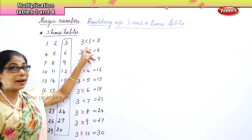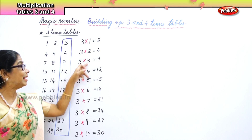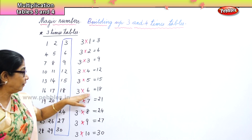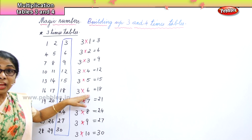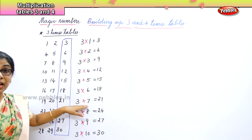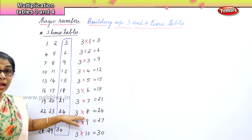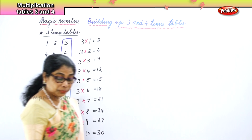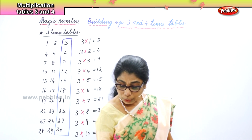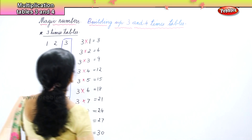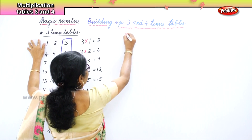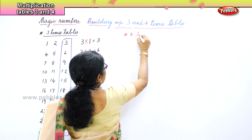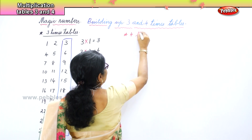So let's read it. Three ones are three, three twos are six, three threes are nine, three fours are twelve, three fives are fifteen, three sixes are eighteen, three sevens are twenty-one, three eights are twenty-four, three nines are twenty-seven, three tens are thirty. Now what are we going to do? We are going to build the four times table.